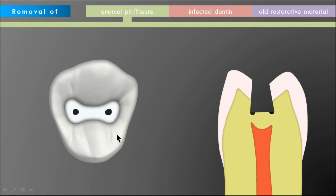Sometimes the two pits visible on the floor could be connected by a fissure of decay. If such a situation occurs, we may have to remove the entire fissure completely by deepening the entire cavity preparation. So we have to remove the enamel pits and fissures which may be visible on the floor of the cavity preparation after the initial stage of tooth preparation.